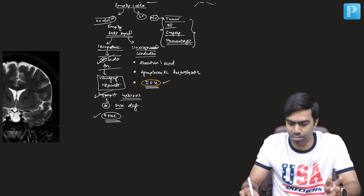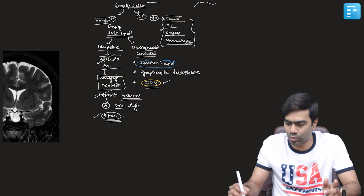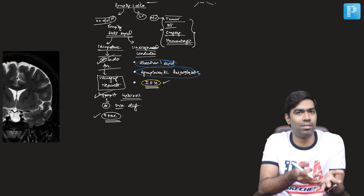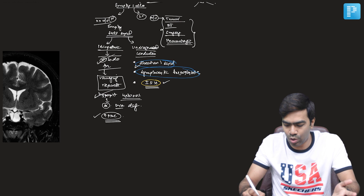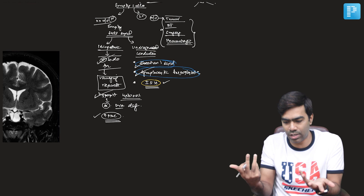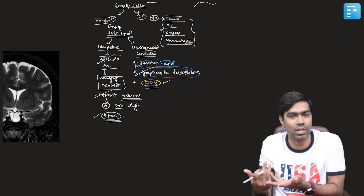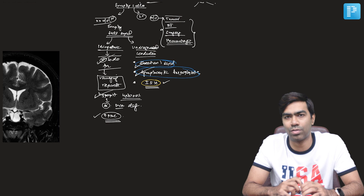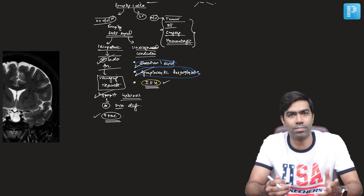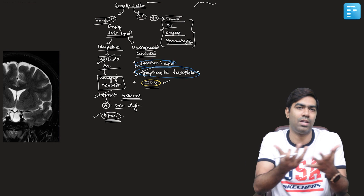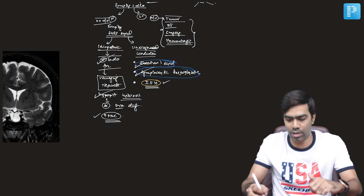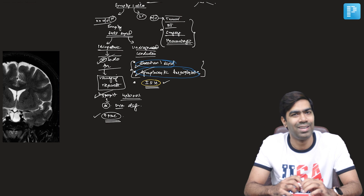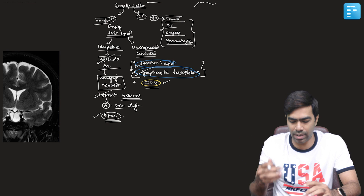Sometimes it could be past undiagnosed conditions like lymphocytic hypophysitis or Sheehan syndrome. Whether to include those under primary empty sella is uncertain, because unless the patient has been previously diagnosed with records, we do not have an idea. But if undiagnosed, it remains undiagnosed and will fall under empty sella by default if you think practically.